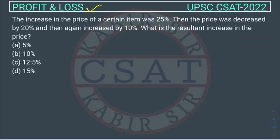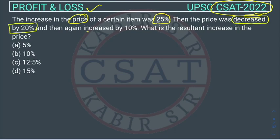This is a profit and loss question asked in UPSC Civil Services Exams CSAT paper in 2022. The question is: the increase in the price of a certain item was 25%, then the price was decreased by 20%, and then again increased by 10%.